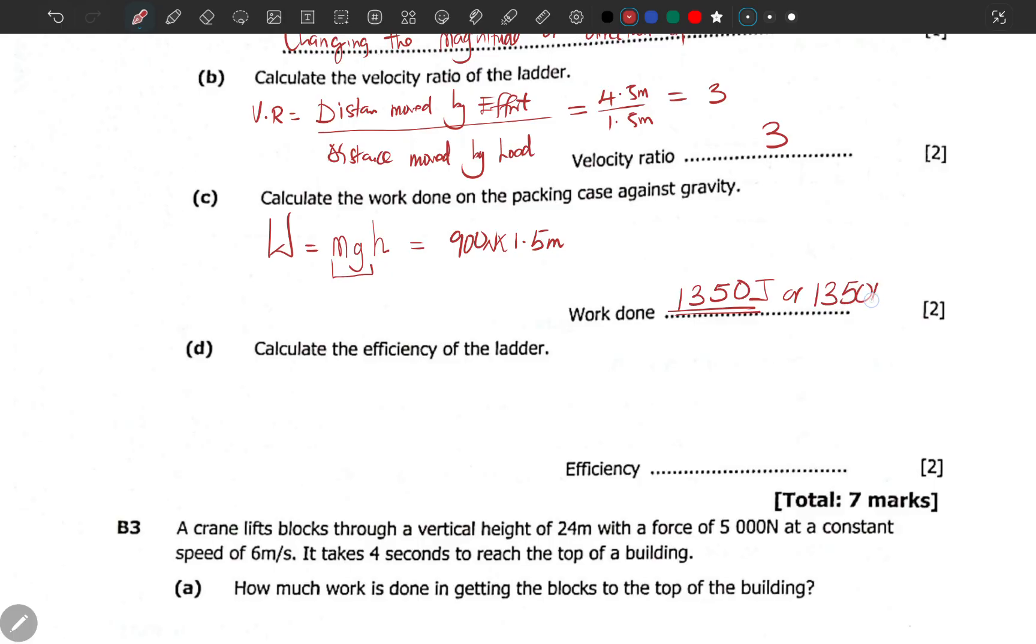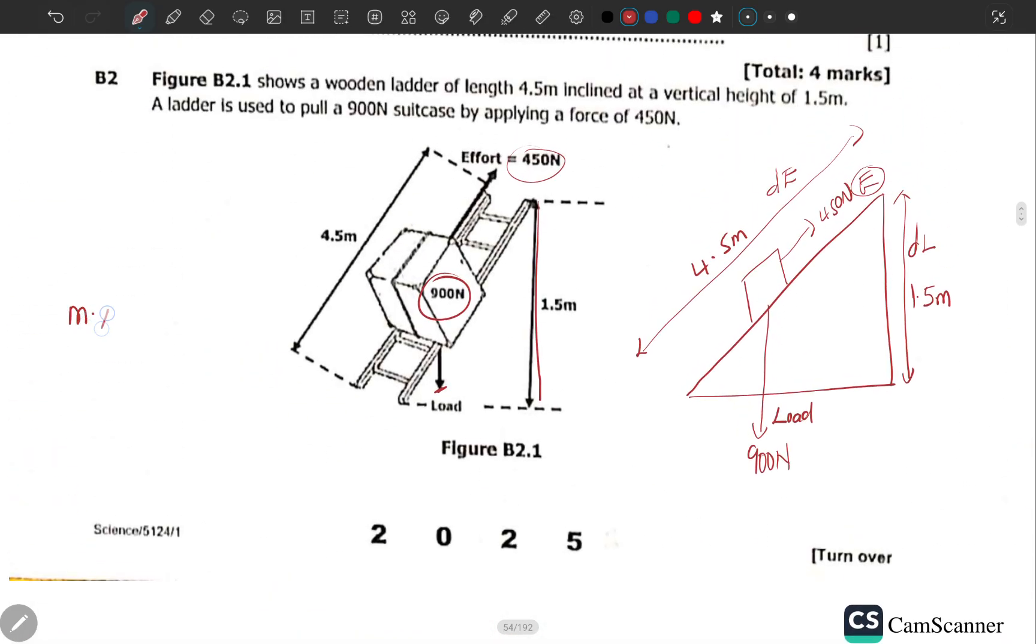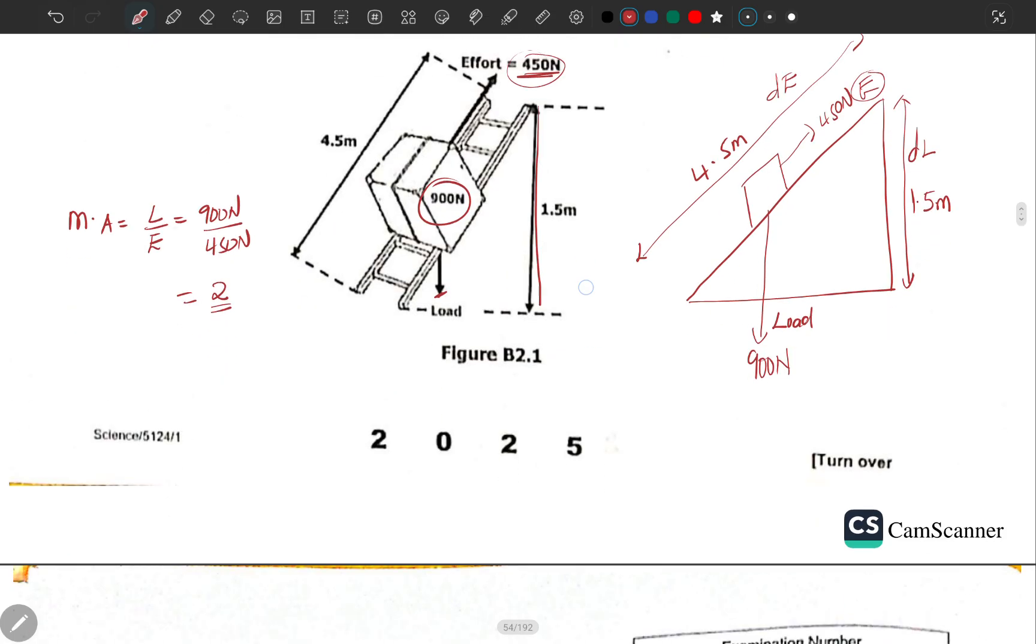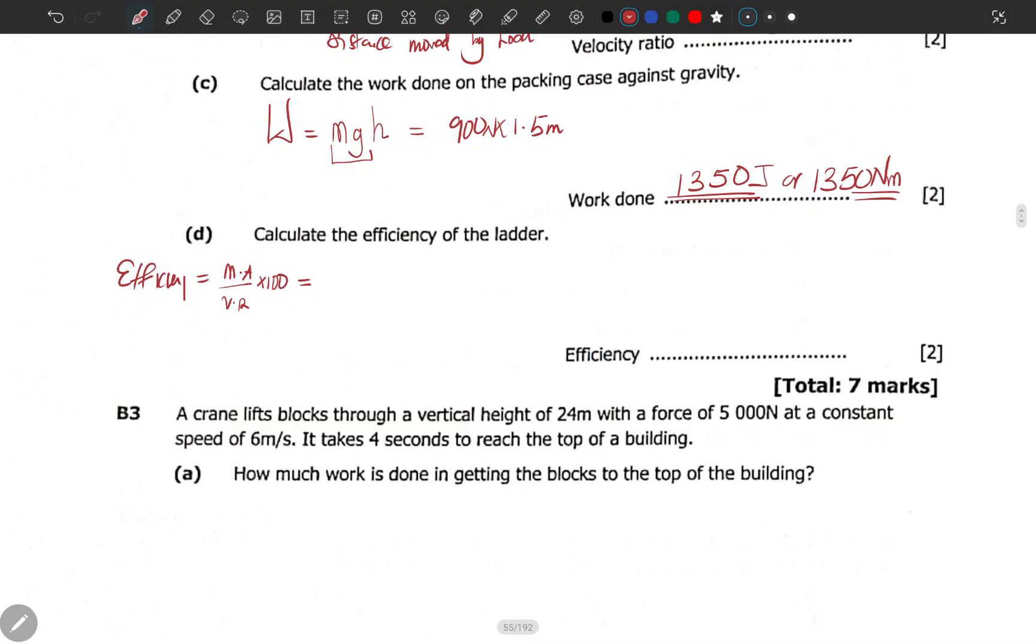You can say 1350 Newton meter. It has to be the same stuff. Calculate the efficiency of the ladder. We can find efficiency in two ways. Efficiency, we can use it in terms of mechanical advantage over the velocity ratio, multiply by 100. What is our mechanical advantage? Mechanical advantage is load over effort. Let's come to the diagram. Mechanical advantage is load over effort. The load is 900 newtons, the effort is clearly written, 450 newtons. This will give us 2 as the magnitude. It doesn't have units as the mechanical advantage. You put 2 over the velocity ratio which is 3, times 100.